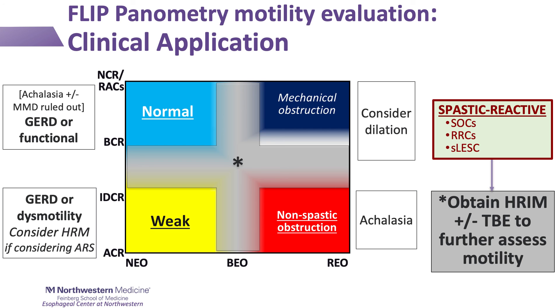Finally, if there is a spastic reactive response, this is the scenario in which these findings could be correlated with manometry and/or timed barium esophagram to help characterize spasm, as well as differentiate between spastic motility disorders or reactive findings such as those related to hiatal hernias.